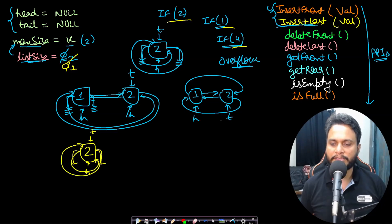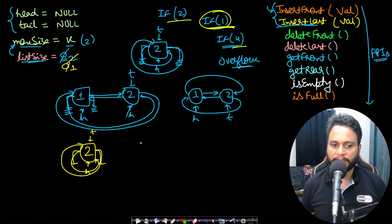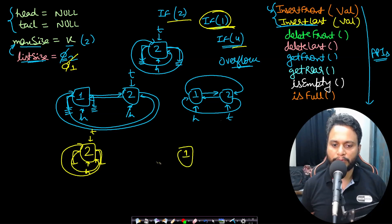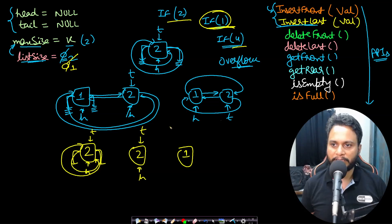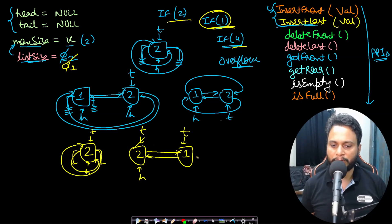If insert last of 1 is called, list size is less than k, so we can insert. Since 1 has to be inserted on the right side, a new node 1 is made. Node 2 is already present as both head and tail. When inserting at the rear, the tail's next pointer points to the new node, the new node's previous pointer points to tail, and then tail is updated to the new node.